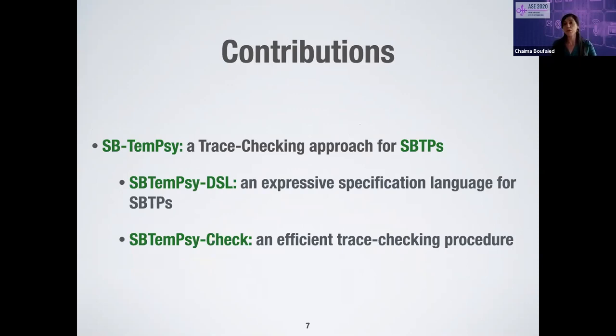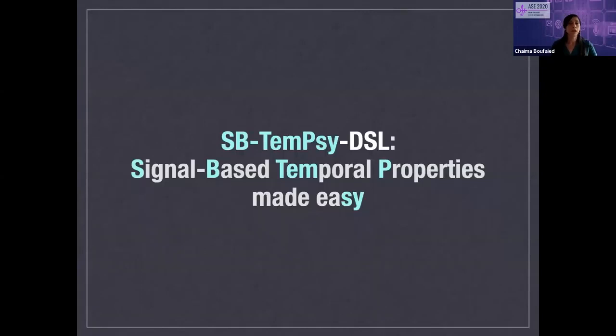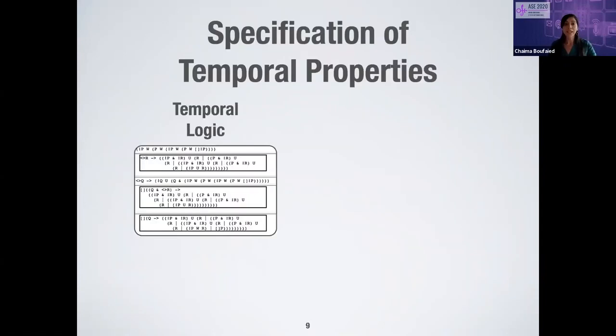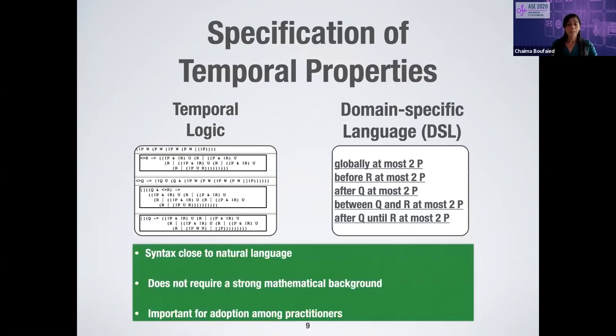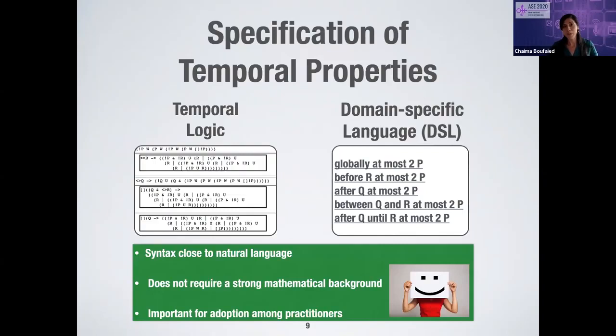SBTAMC comes with two contributions: SBTAMC DSL, our expressive specification language for specifying signal-based temporal properties, and SBTAMC Check, our efficient trace checking procedure. We chose a domain-specific language because DSLs come with syntax close to natural language, do not require a strong mathematical background unlike temporal logics, and are especially important for adoption among practitioners.